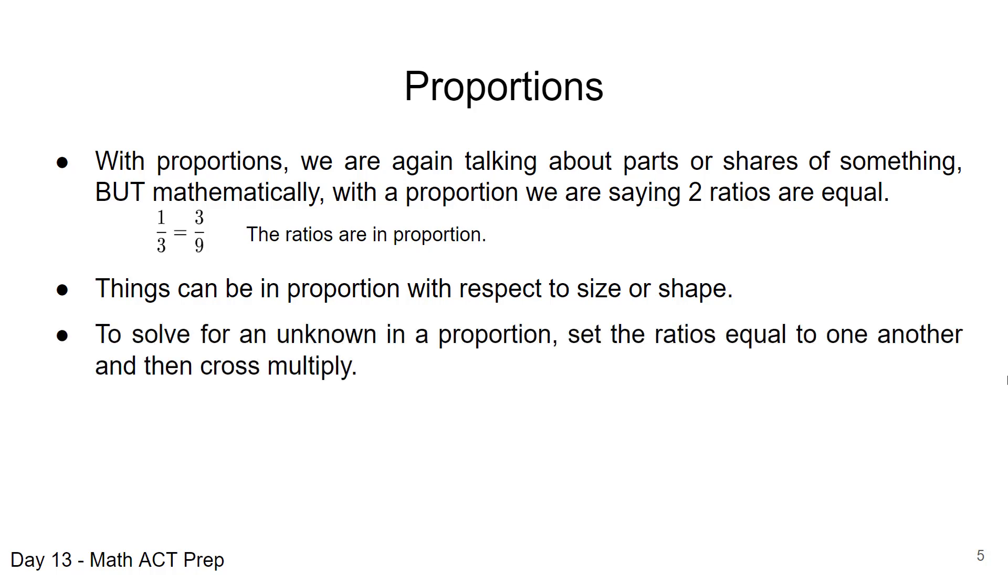When we want to solve for an unknown in a proportion, we can set the two ratios equal to one another and then cross multiply. For example, if you have this type of problem and we're asked to find the value of x, we can cross multiply. We multiply across: four times 20 and five times x. Now we're going to be able to solve for x when we simplify both sides, and we get that x is equal to 16.